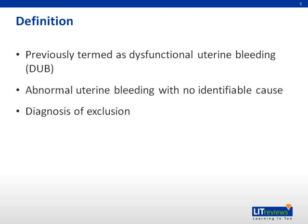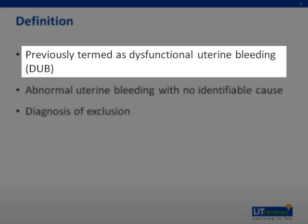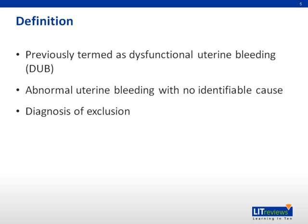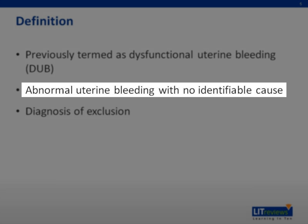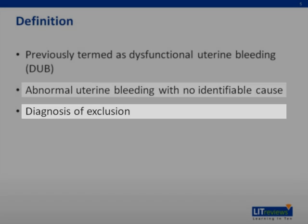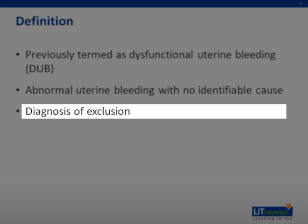Abnormal uterine bleeding, idiopathic, was previously termed as dysfunctional uterine bleeding, DUB. DUB is defined as any abnormal uterine bleeding with no identifiable cause. It is a diagnosis of exclusion after ruling out pregnancy and all other possible pathological causes, including genital tract pathology and systematic diseases.